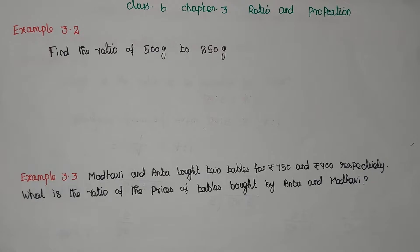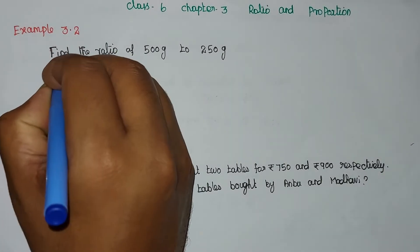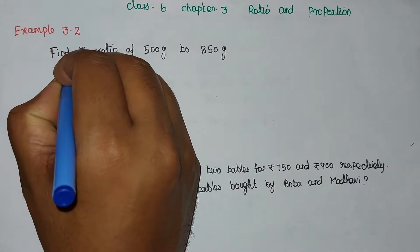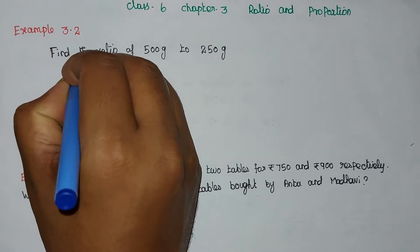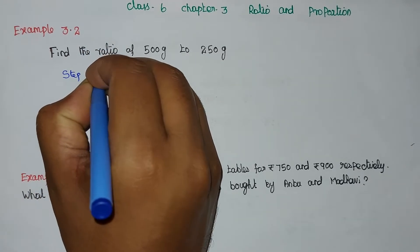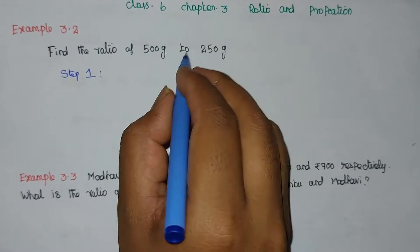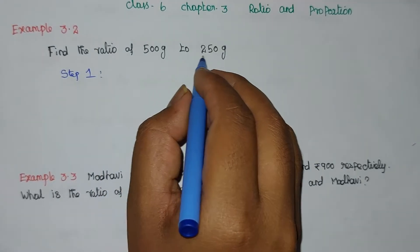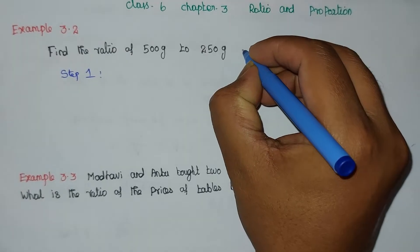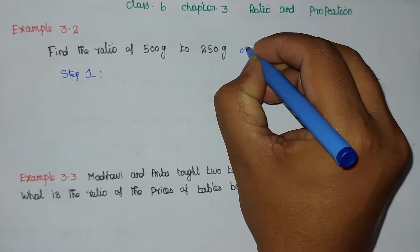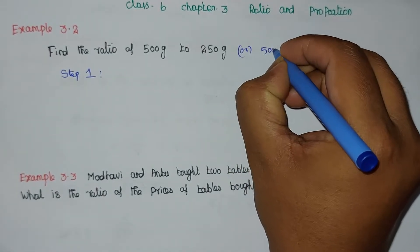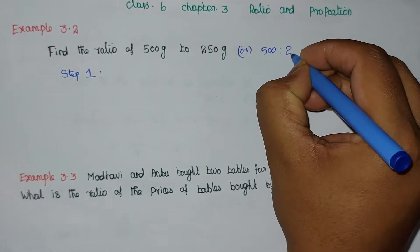Now we are going to solve example 3.2. Find the ratio of 500 gram to 250 gram. Step 1: we write this in ratio format as 500 is to 250.